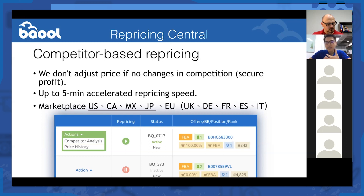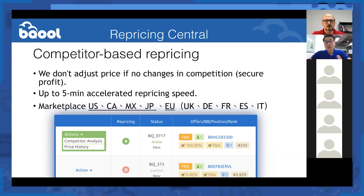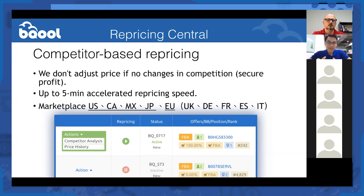We are able to reprice up to five minutes, but keep that in mind — repricing five minutes doesn't mean we check on each of your listings every five minutes. Repricing speed of five or fifteen minutes means when we receive the price change report from Amazon, we are able to finish the calculation and send it back to Amazon within five or fifteen minutes.